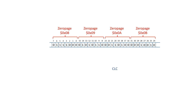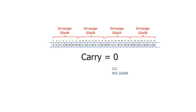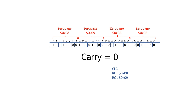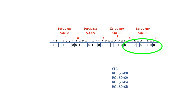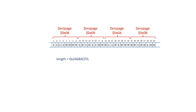Or we could just unroll the loop. We clear carry, then shift left the bits at location 8 — the most significant bit is transferred into carry. Next we do the ROL at location 9 — carry goes into the least significant bit, and after the rotate the most significant bit goes into carry. We continue this for locations A and B. When we're done, the integer variable 'length' has been shifted left by one position.